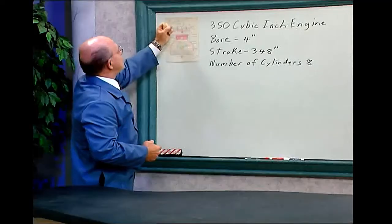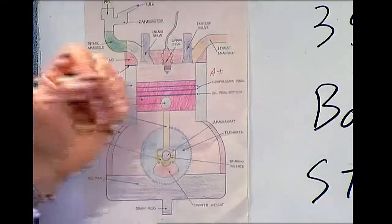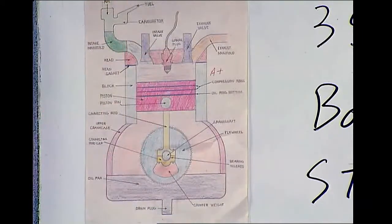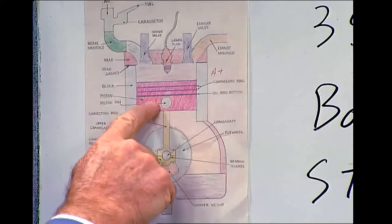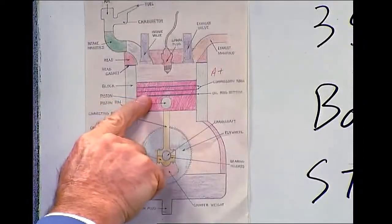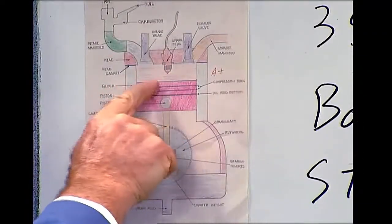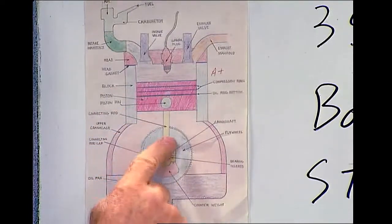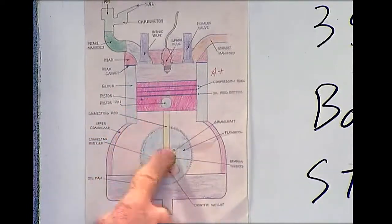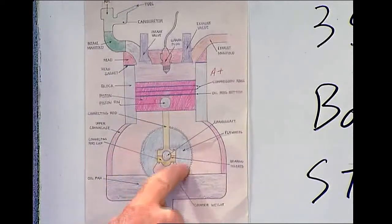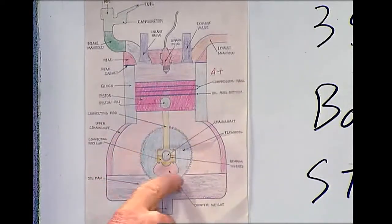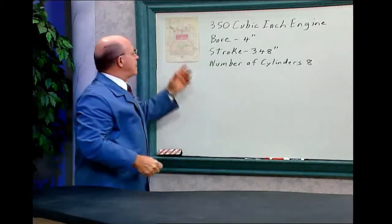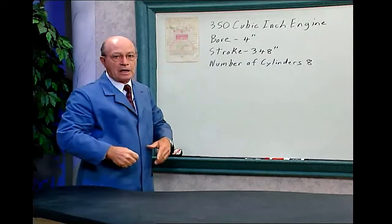Intake, compression, power, exhaust. This piston has rings on it which prevents the oil from going up into the combustion chamber and prevents gases from escaping into the crankcase. This piston goes up and down straight and this shaft, the crankshaft, changes the up and down motion to rotary motion. That's how the four cycle engine works.